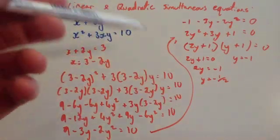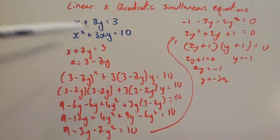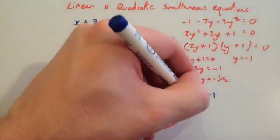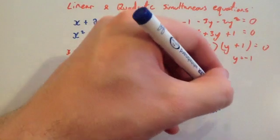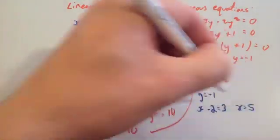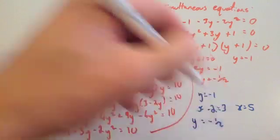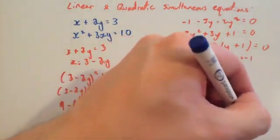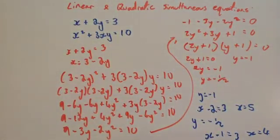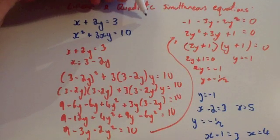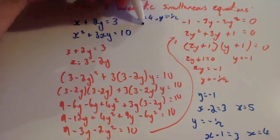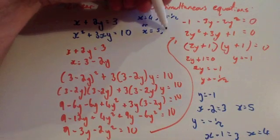Now substitute those back into the linear equation. When y equals minus 1: x minus 2 equals 3, so x equals 5. When y equals minus one half: x minus 1 equals 3, so x equals 4. So our solutions are: x equals 4, y equals minus one half; or x equals 5, y equals minus 1.